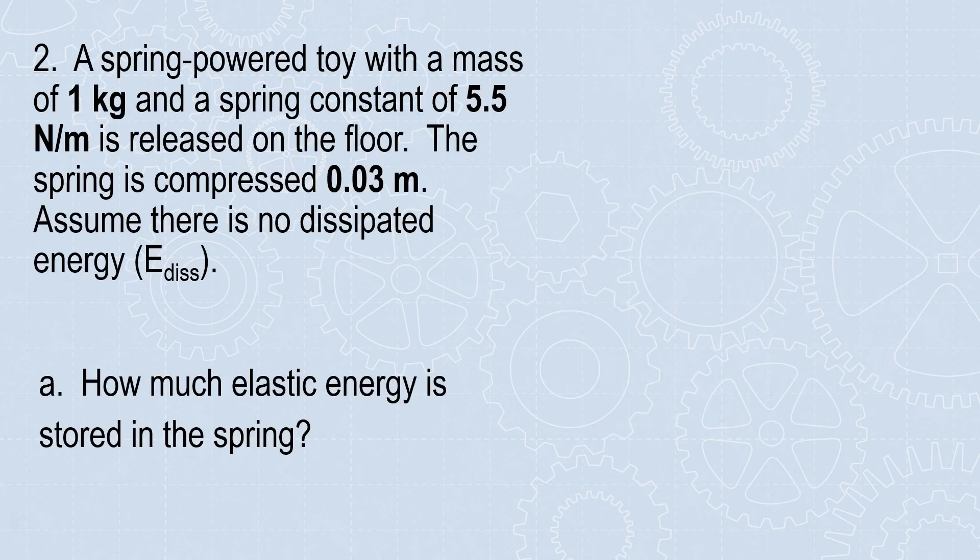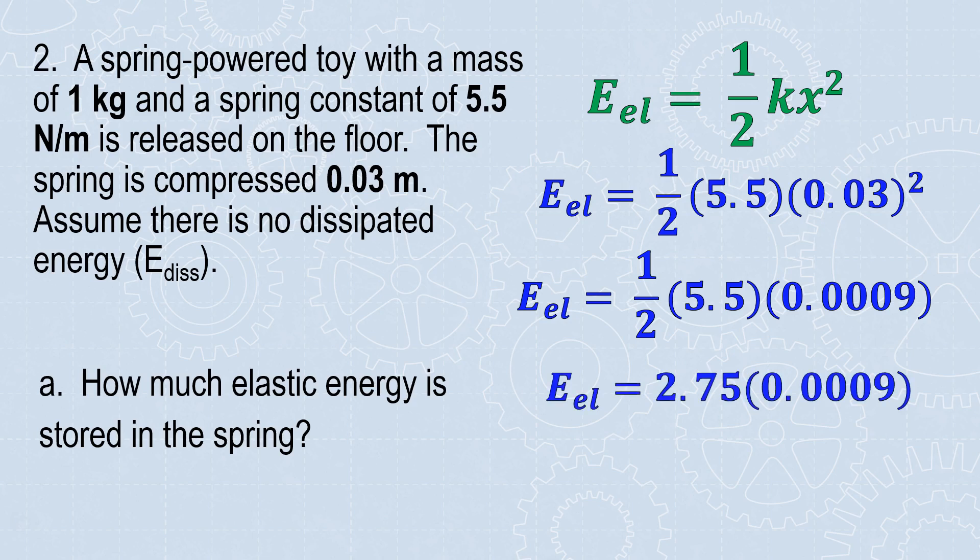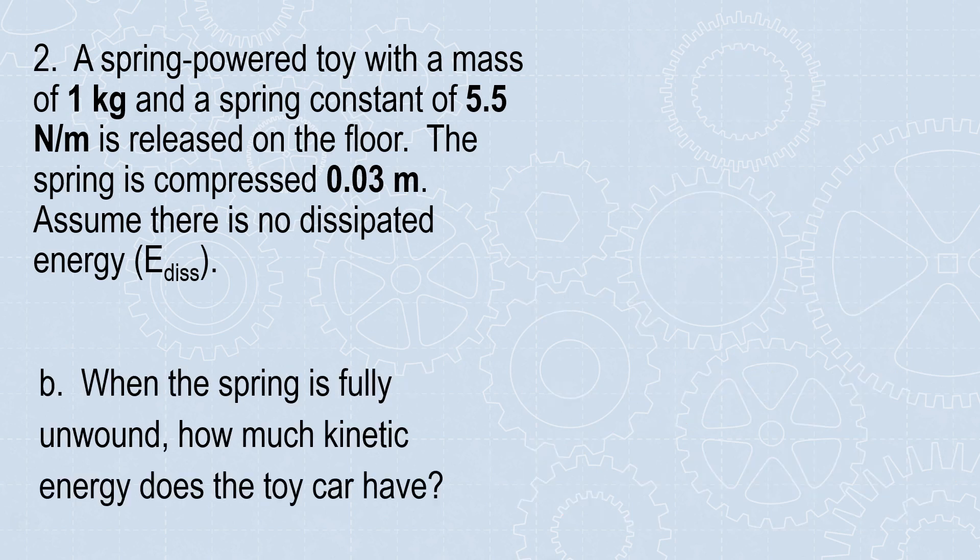Now we have a spring-powered toy with a mass of one kilogram and a spring constant of 5.5 newtons per meter. It's released on the floor. The spring is compressed 0.03 meters. Assume there is no dissipated energy. How much elastic energy is stored in the spring? Well, we're talking about a spring. It asks for elastic energy, and we're given a spring constant. That's our formula right there. And because it's asking for energy, not force, we're using this formula. I'm going to plug in what I know. One half of my spring constant times the distance the spring was stretched. If you're unsure of which variables go where, look at the units on your toolbox. We plug in what we know. We need to square and then multiply. It's just order of operations at this point. 0.0025 joules of energy is stored in the spring.